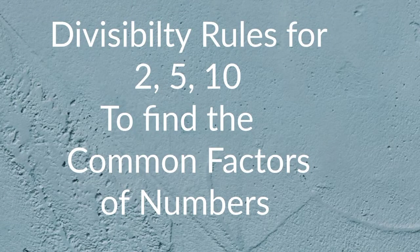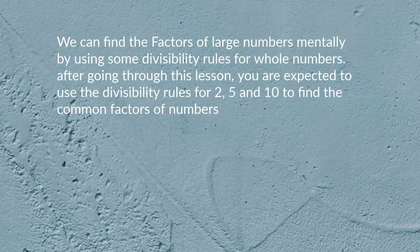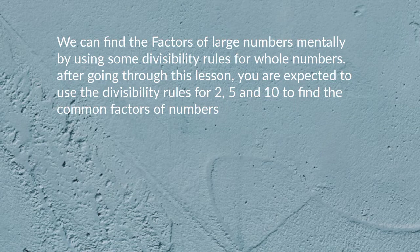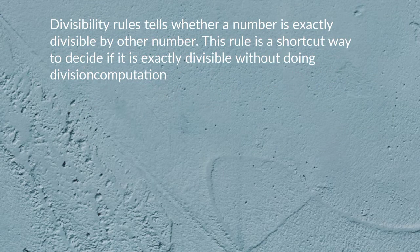Divisibility rules for 2, 5, and 10 define the common factors of numbers. We can find the factors of large numbers mentally by using divisibility rules for whole numbers. After going through this lesson, you are expected to use divisibility rules for 2, 5, and 10 to find the common factors of numbers. Divisibility rules tell whether a number is exactly divisible by another number — it is a shortcut way to decide without doing division computation.